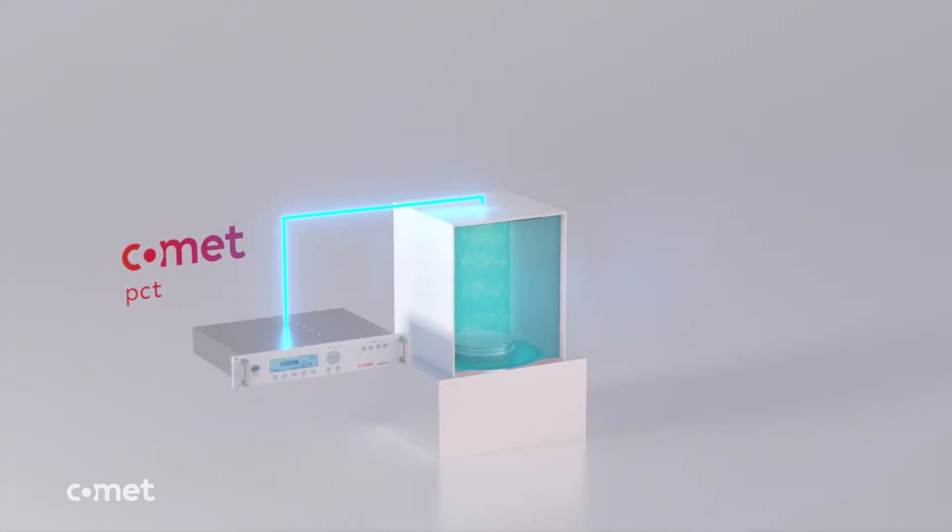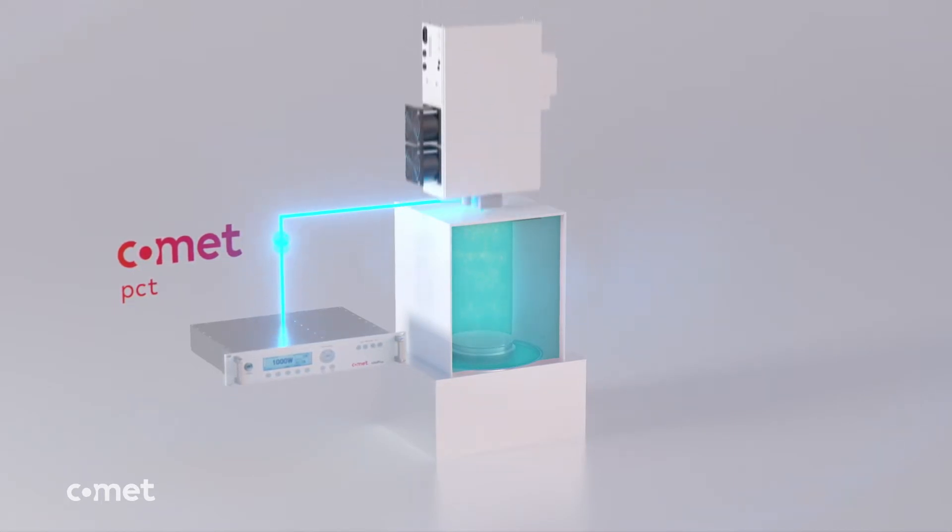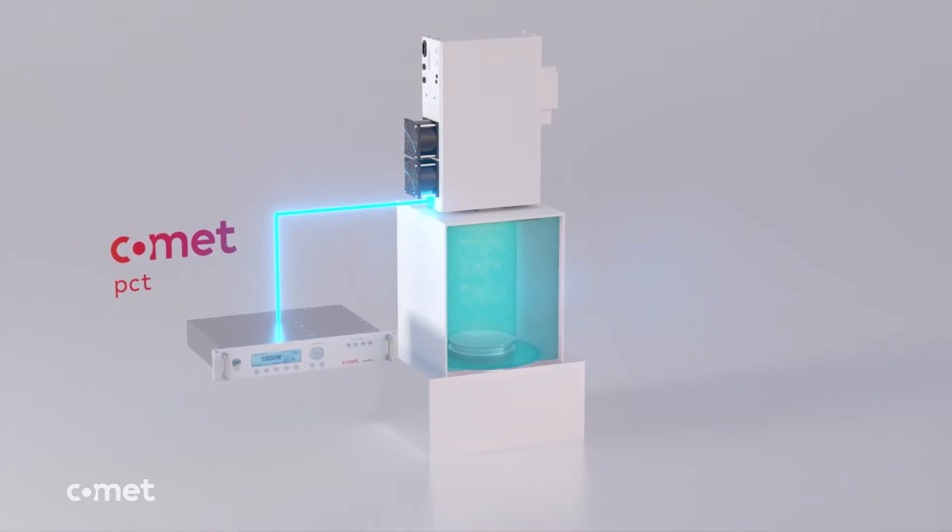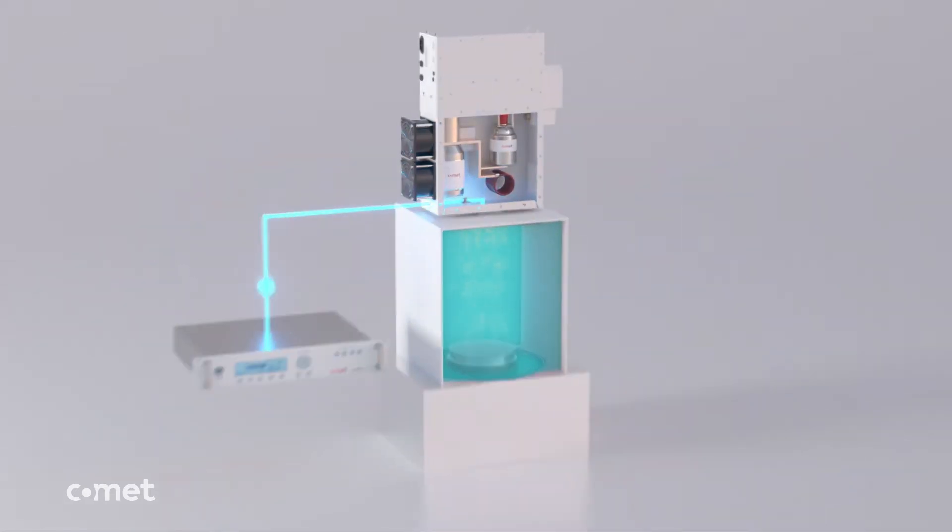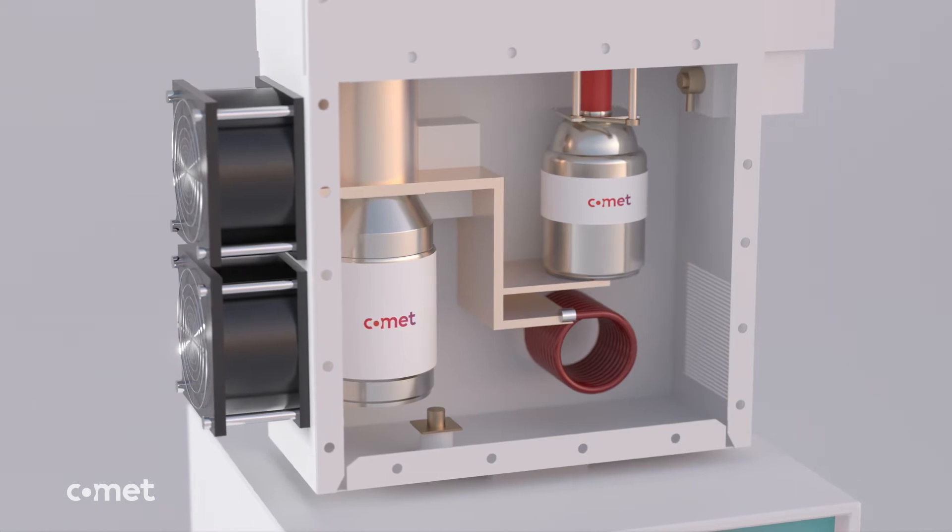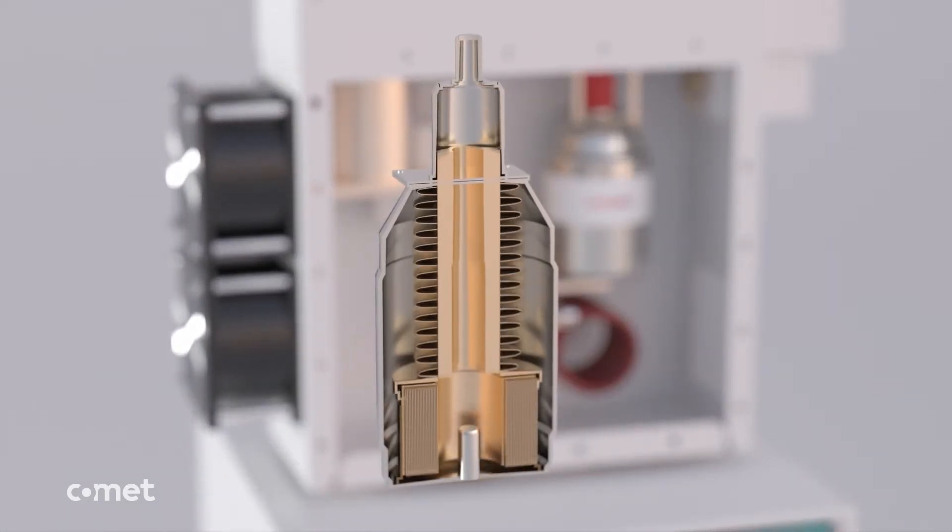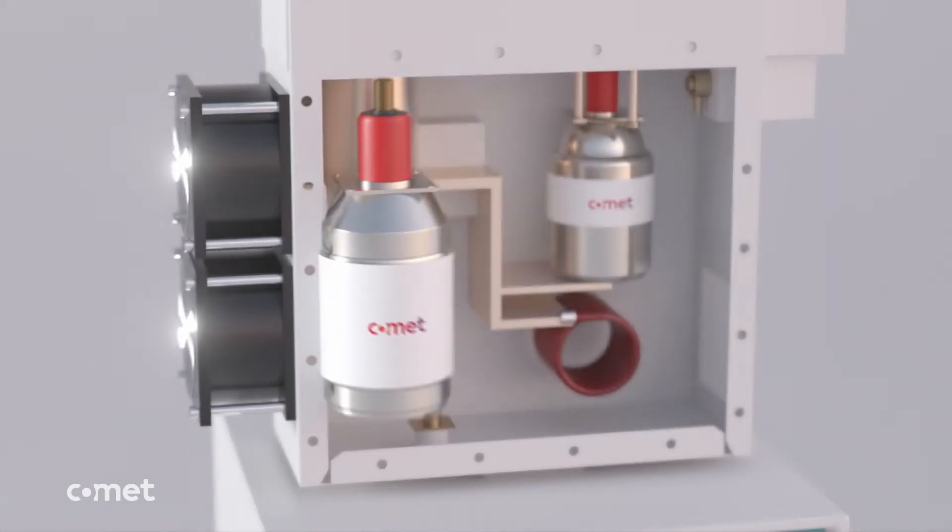When connecting the generator directly with a coaxial cable, the RF power is reflected, which is why it requires a so-called matchbox to transform the RF impedance of the chamber to the coaxial cable. Since the impedance of the chamber is changing during the process, variable vacuum capacitors are used in the matchbox for automatic tuning.